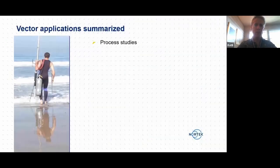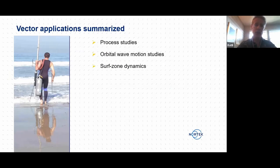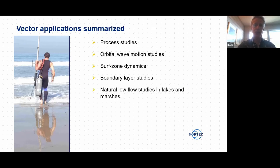So to summarize, the vector is used for process studies. It is used to measure orbital wave velocities both on breaking waves and under more linear waves. They're used in surface dynamic studies and they're used for boundary layer studies because they have the ability to measure very close to the seabed. Quite a few applications also involve low flow down to millimeter per second velocities. This is something that is very difficult for other types of instruments to do. And of course, for turbulent measurements.